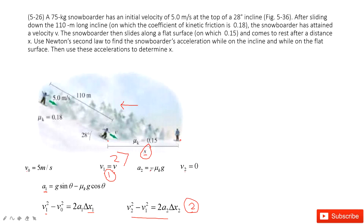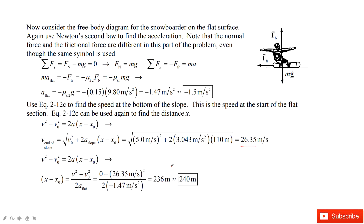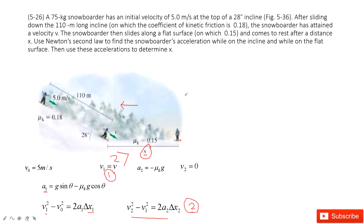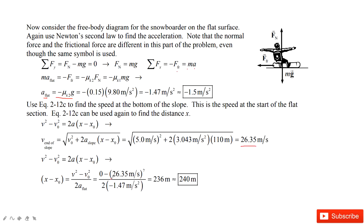Now for step two: we find acceleration a2 for horizontal motion. On the y component, normal force equals gravity. On the x component, negative friction equals mass times acceleration. So a2 = negative μk·g = -1.5 m/s². With v2 = 0, v1 = 27 m/s, and a2 = -1.5 m/s², we use the kinematic equation to find Δx2 = 240 meters. Thank you.